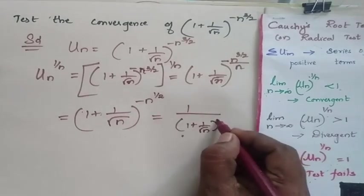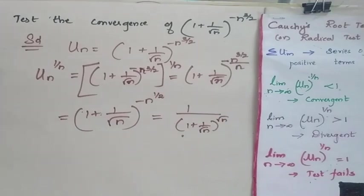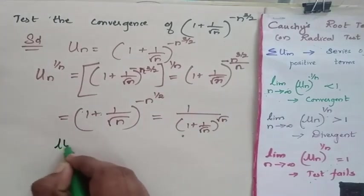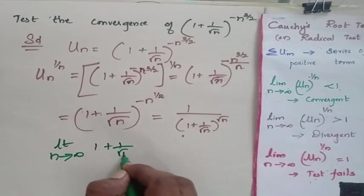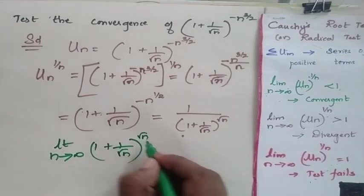N power 1/2 can be written as root n. Now I know that limit n tending to infinity of (1 + 1/√n)^(√n) is equal to e.